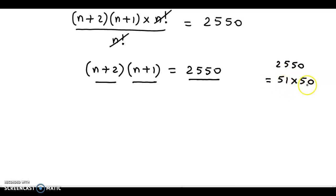Again, we can get two factors, right? With a difference of 1 and in descending order. So, we replace 2550 by 51 × 50. So, we have (n+2)(n+1) = 51 × 50.